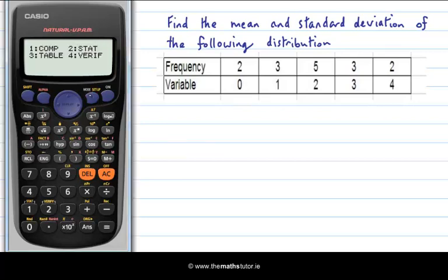So we go mode and two for stats and then one for one var. Now you see here we only have one column for our variables. What we want though is a second column which has frequencies in it. So we need to select the frequency and we need to go to the setup here which is also in the mode button but it is in yellow so it is shift and then mode. So I am going to show you how to turn on the frequency.